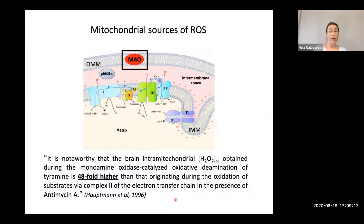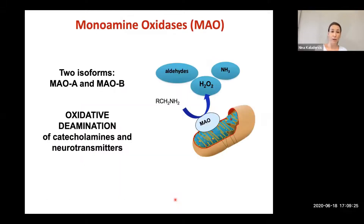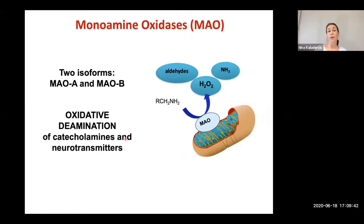We thought that MAO is capable of producing quite a large amount of H2O2, and we wondered whether this could contribute to the progression and development of cardiovascular diseases. MAOs exist in two isoforms, A and B. They are localized at the outer mitochondrial membrane and are responsible for the oxidative deamination of catecholamines and neurotransmitters. During this process, they generate products such as aldehydes, ammonia, and H2O2.